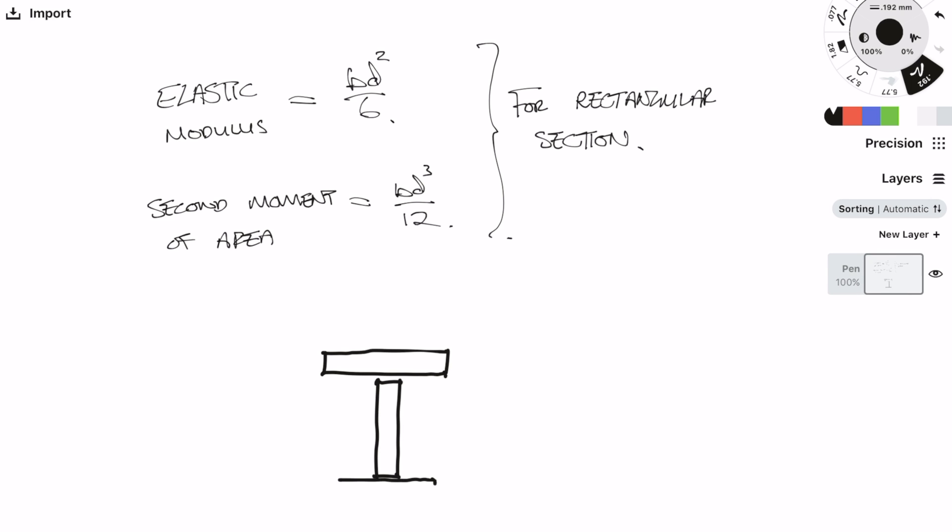The next equation is the second moment of area, or sometimes also known as the moment of inertia. Whilst not too commonly used on its own, it is an equation you should really know because it is so similar to the elastic modulus, and it's really useful for determining second moment of areas in plate girders by using parallel axis theorem.